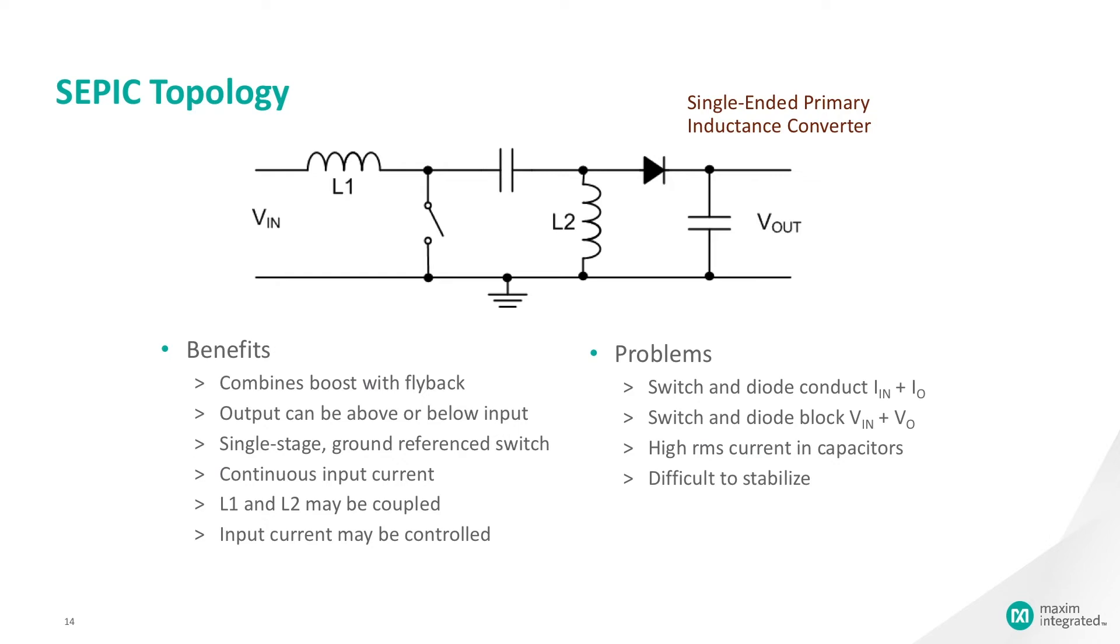The single-ended primary inductor converter, or SEPIC, is a type of DC-to-DC converter allowing the voltage at its output to be greater than, less than, or equal to that at its input. The output of the SEPIC is controlled by the duty cycle of the control transistor.